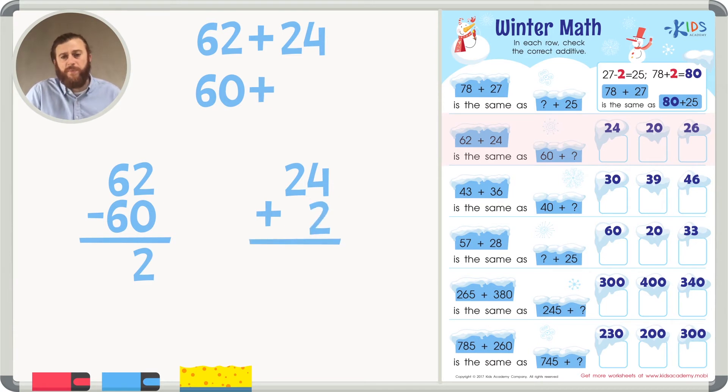So let's add 24 plus 2. First, we'll add 4 plus 2 in the ones place. 4, 5, 6. 4 plus 2 is 6. And 2 plus nothing is 2. Now we have the equation 60 plus 26.